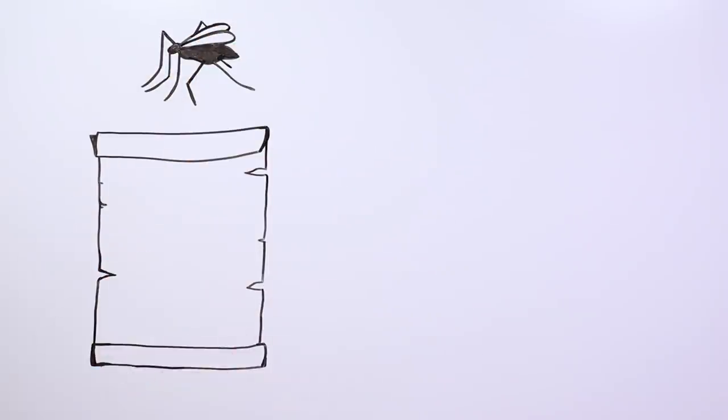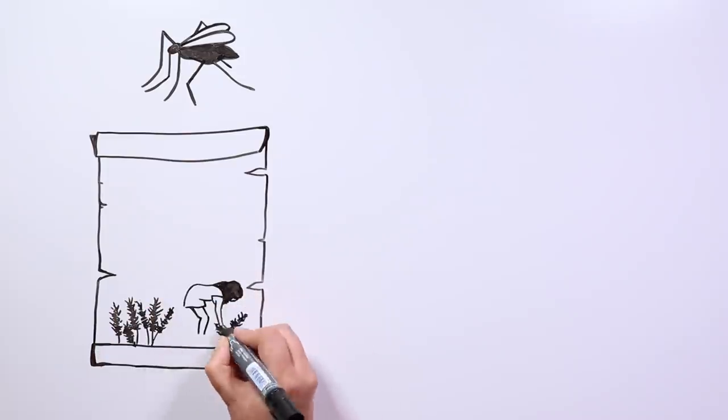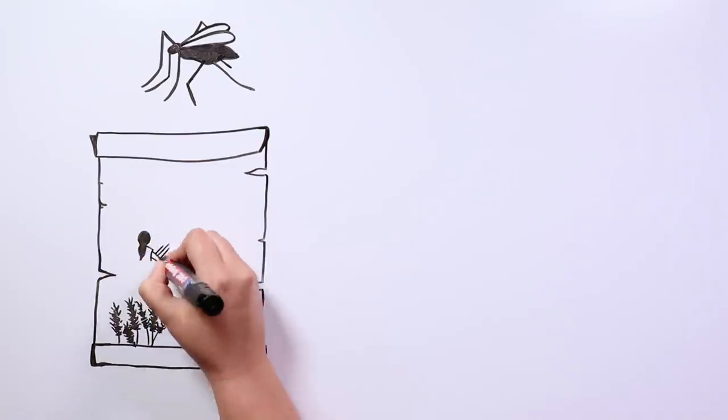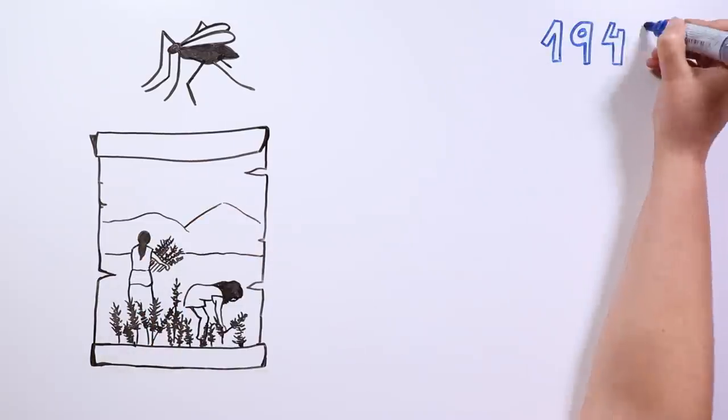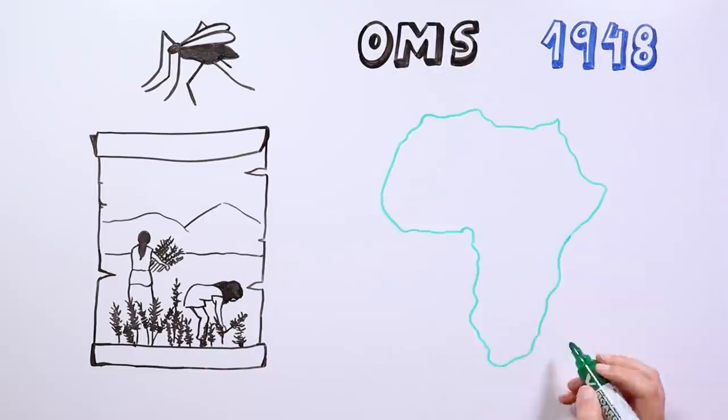But do you know how malaria is transmitted, tiktakers? By the bite of a mosquito! Its origin is closely linked to the beginning of agriculture, and it appears in texts from the 4th century before Christ. In 1948, the World Health Organization recognized it as a world health problem.